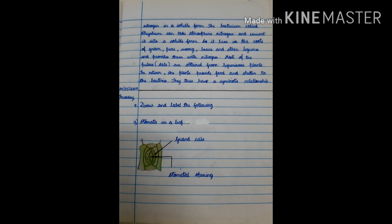Plants can use it in the manner they can use carbon dioxide. They need nitrogen in a soluble form. The bacterium called rhizobium can take atmospheric nitrogen and convert it into a soluble form. So, it lives in the roots of gram, peas, moong, beans and other legumes and provides them with nitrogen. Most of the pulses are obtained from leguminous plants. In return, the plants provide food and shelter to the bacteria. They thus have a symbiotic relationship.